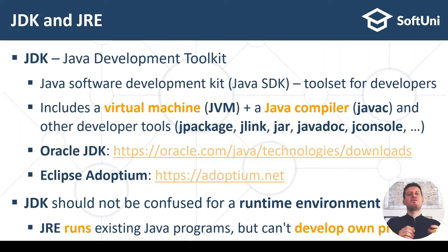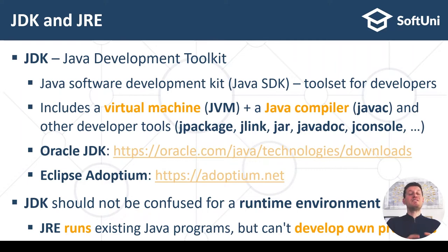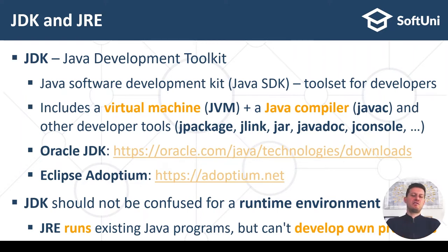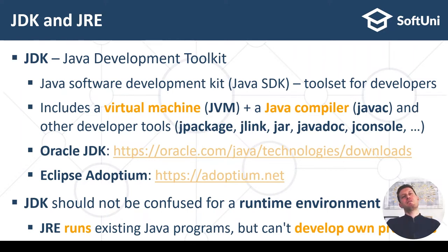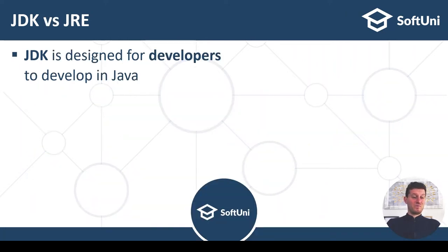JDK should not be confused with JRE. JRE is the runtime environment for Java and JDK is a toolset for developers. For example, JRE does not have a compiler because JRE runs existing Java programs. If you play a game based on Java, it will use a kind of JRE or a binary package built with jpackage or jlink, and it will not have a compiler because game players don't need a compiler — they only need the executable runtime files.